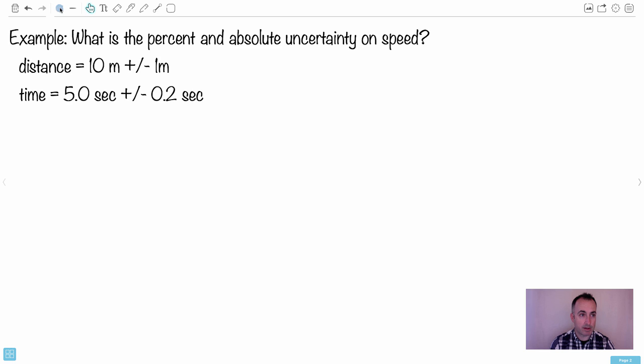So here we go. We have an actual example here. So what's the percent and absolute uncertainty on the speed? So here we have a distance of 10 meters plus or minus 1 meter, and we have a time of 5.0 seconds plus or minus 0.2 seconds.